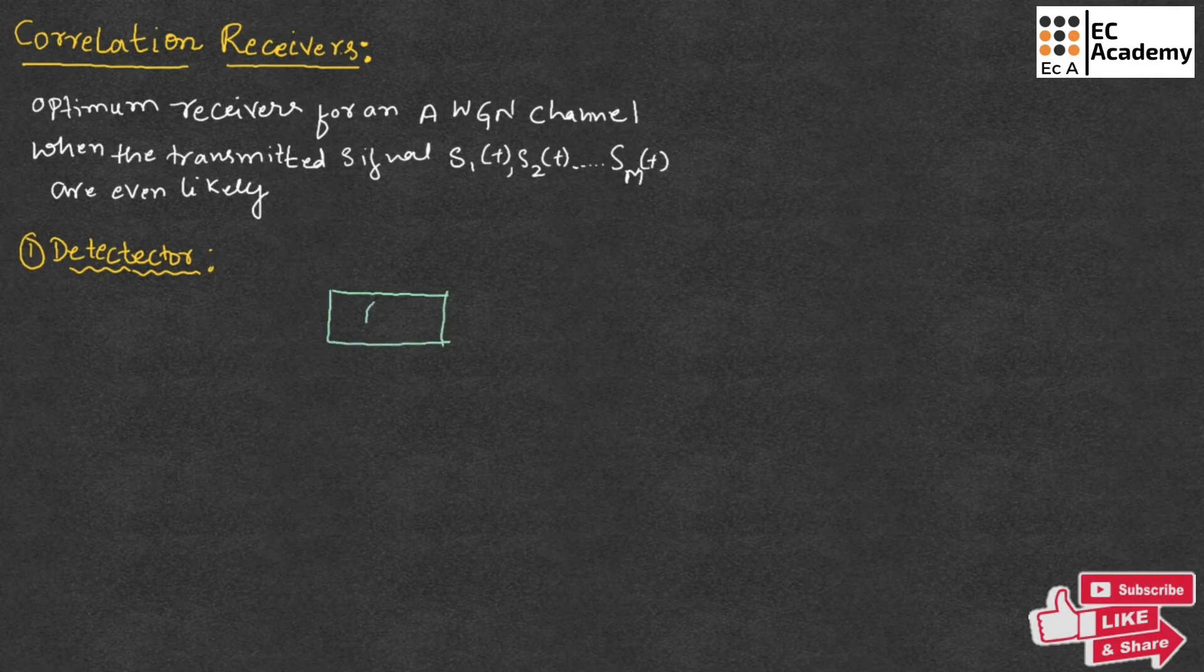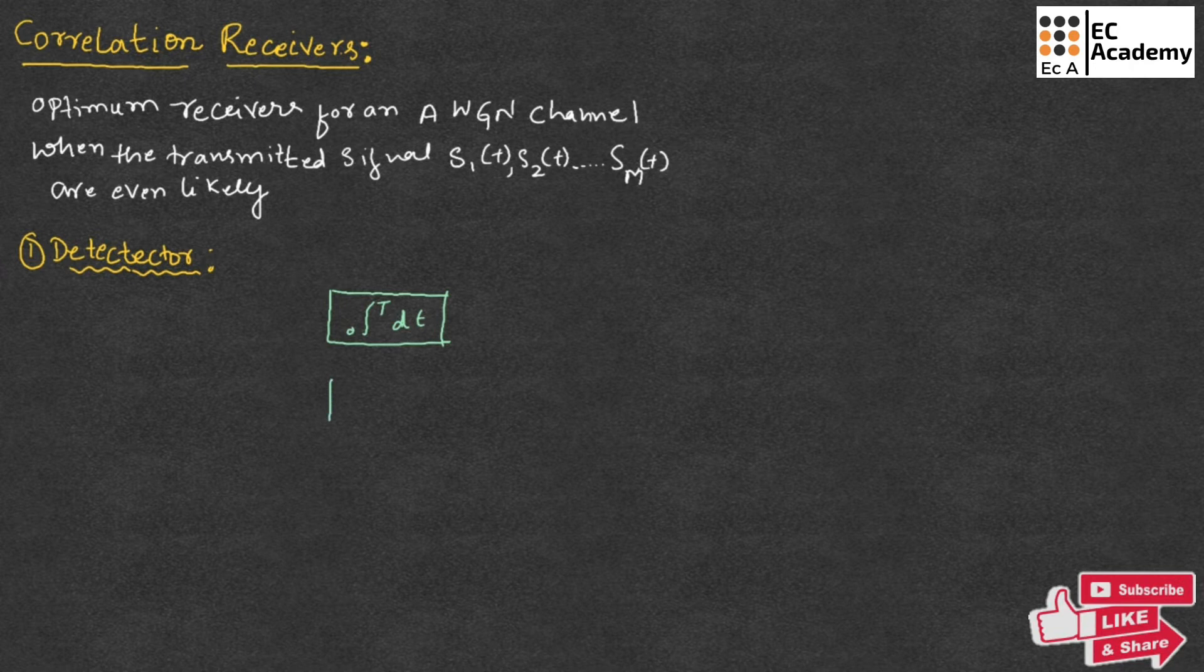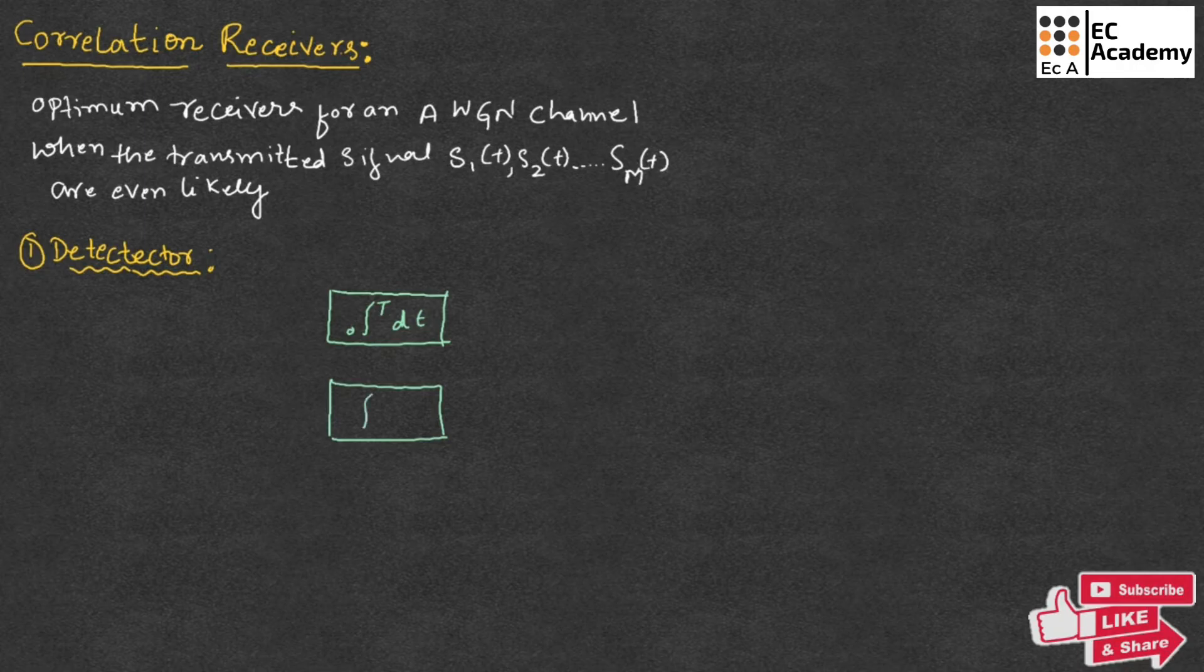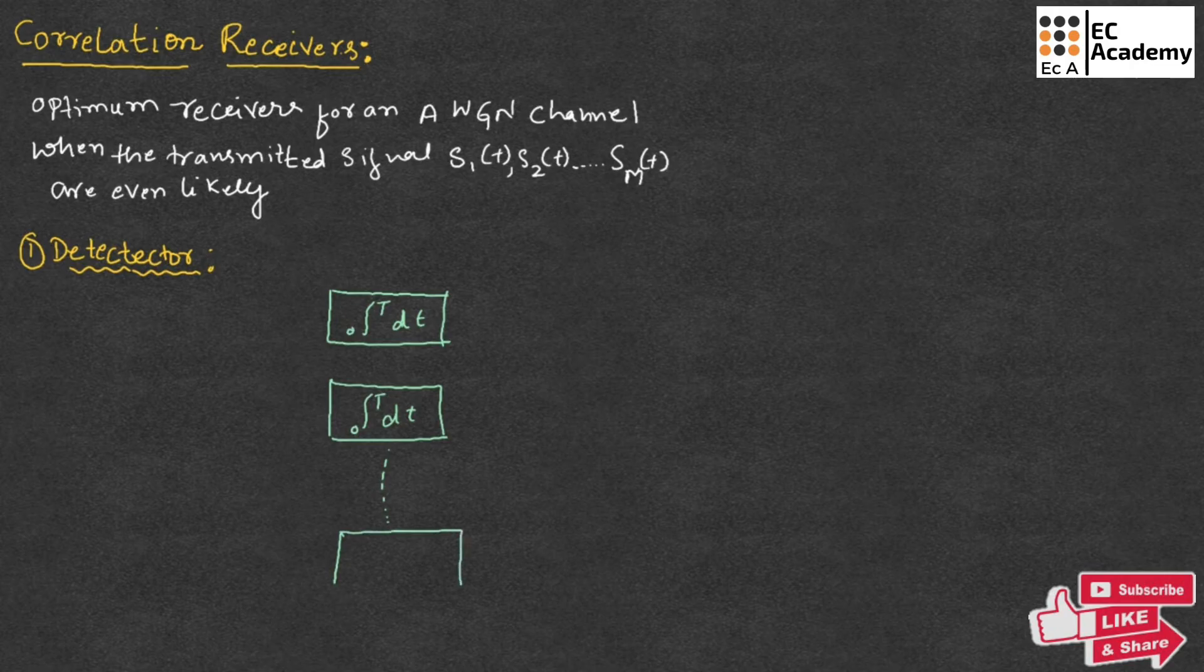So this is one correlator, integration of 0 to T, DT. Likewise, it will be having another correlator. Integration of 0 to T, DT and so on. Up to M number of correlators. So here, it will be integration of 0 to T, DT.